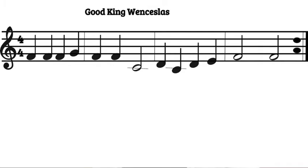The next song we're going to learn is Good King Wenceslas. This is also for right hand on the same notes, so leave your fingers where they were for Jingle Bells. I am going to do the same procedure — I'm going to say the letter names, then say the letter names with the accompaniment, and then just play. It starts on F. One, two, ready, play.